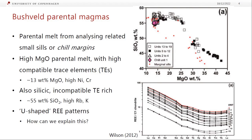The parental magmas to Bushveld are a little difficult to determine in big intrusions, so the parental melt compositions were determined by analyzing small sills associated with the complex, or by examining chill margins where the magma froze rapidly against cold crustal rocks. This gives something close to the original composition: a high magnesium parental melt with about 13 weight percent MgO, high in compatible trace elements, high in nickel and chromium.